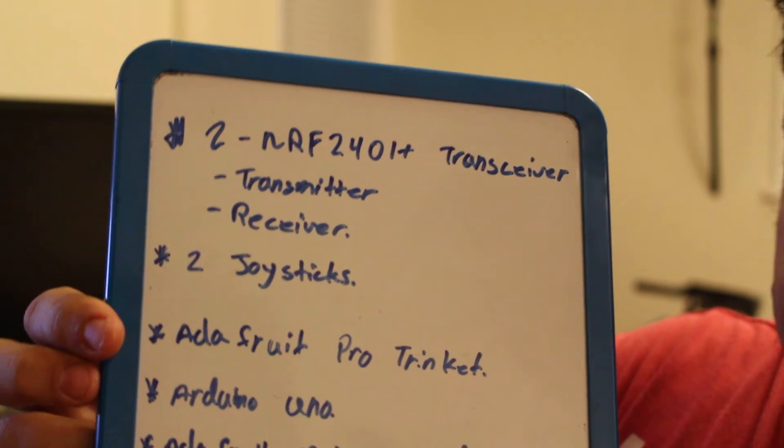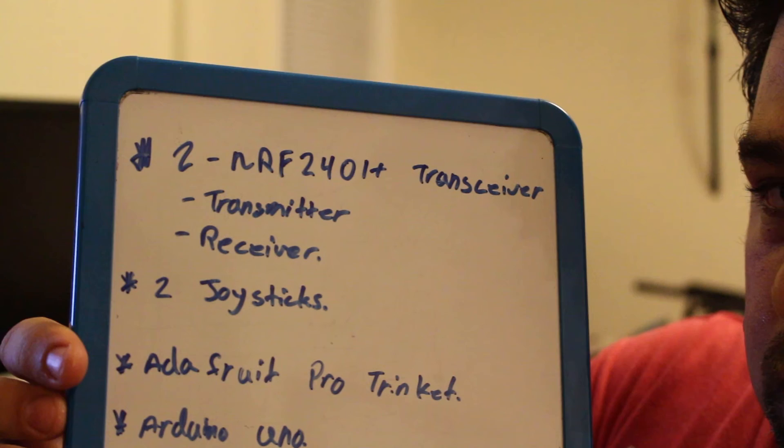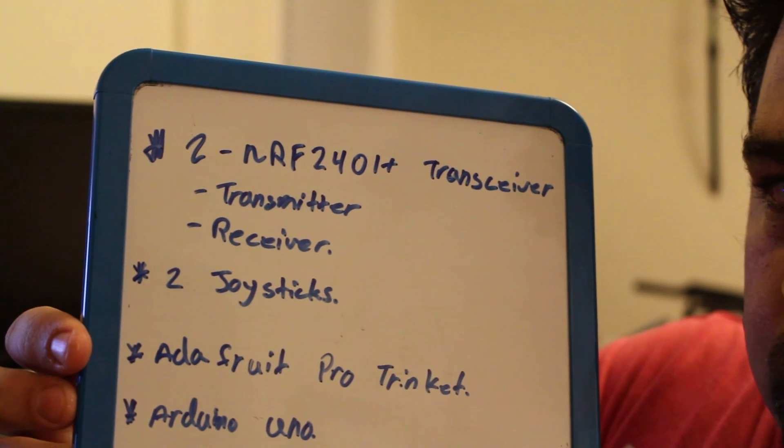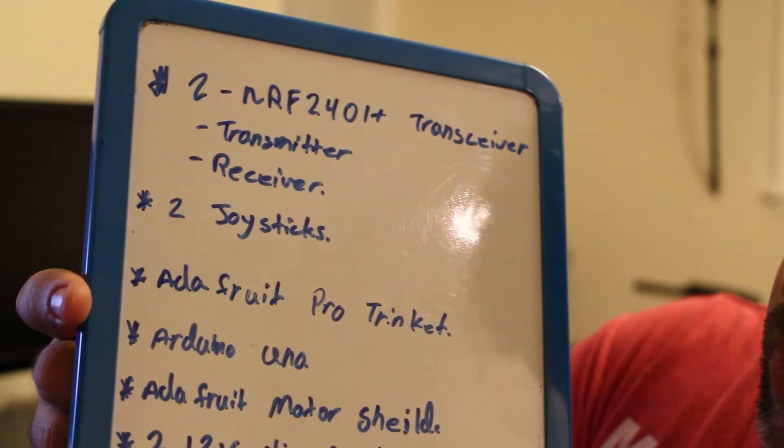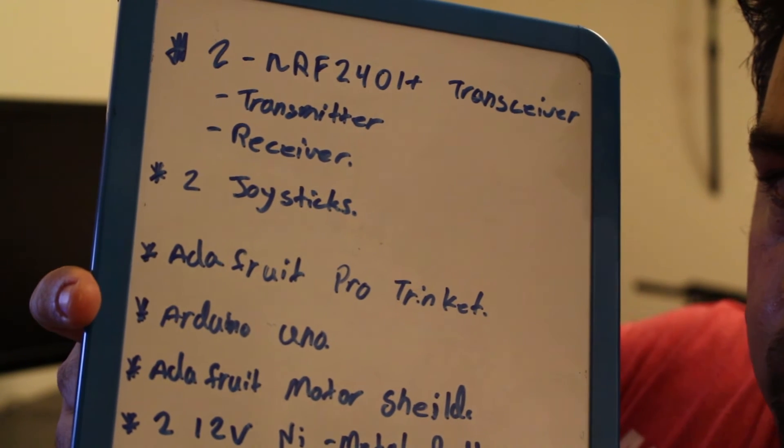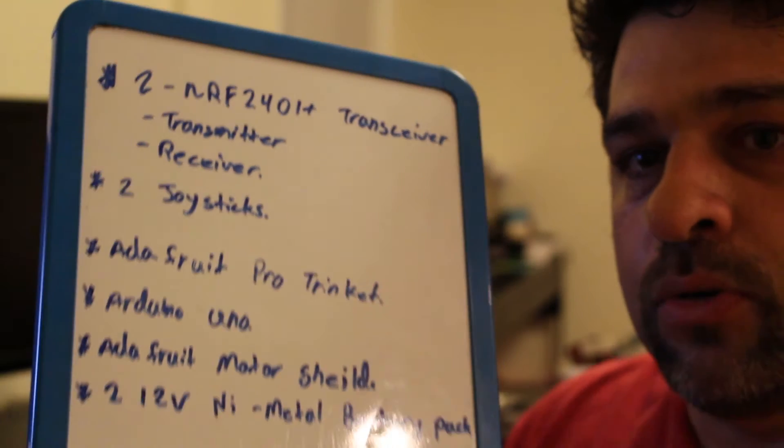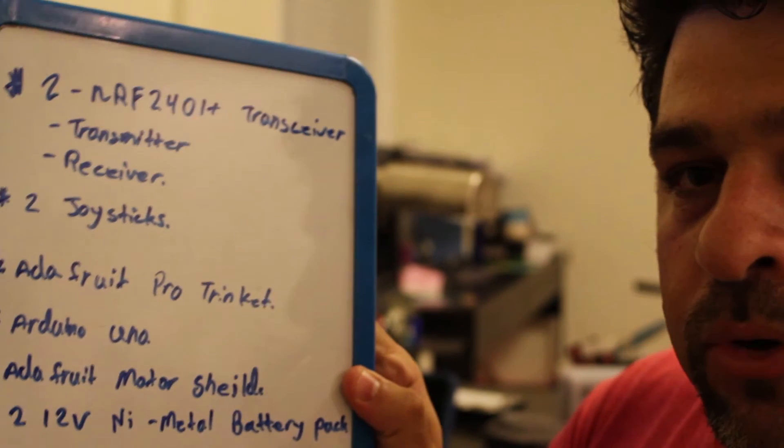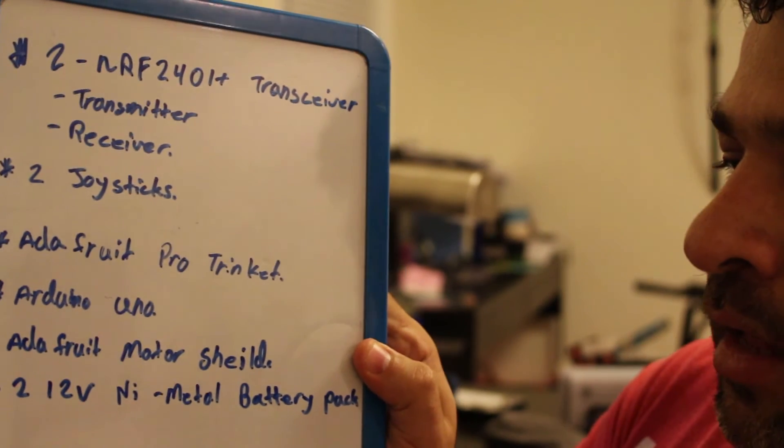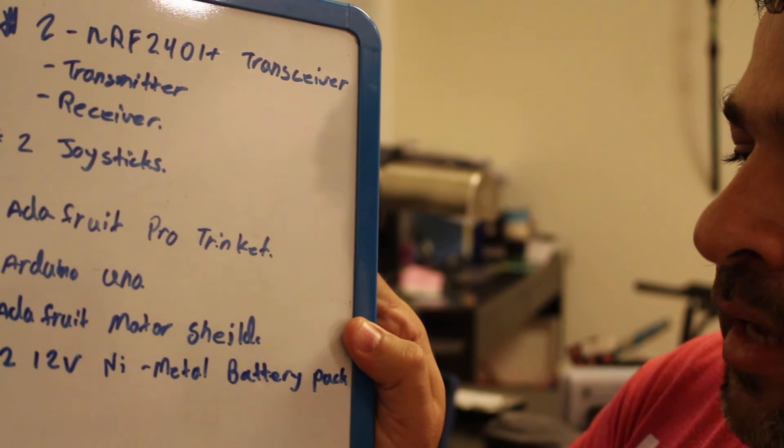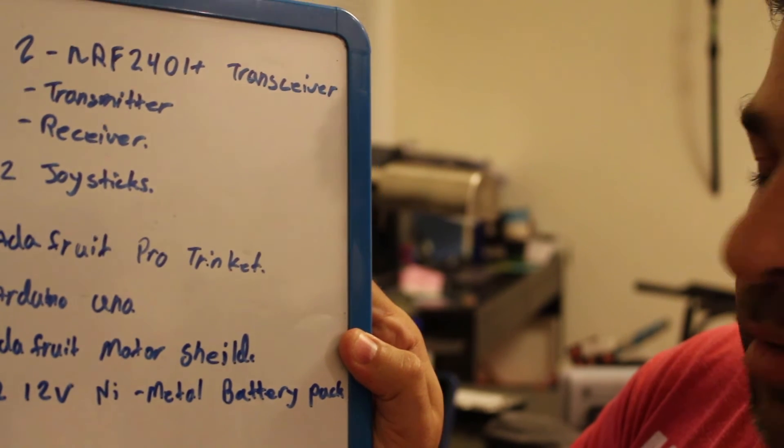We'll use the Adafruit Trinket for transmitting the data. And then we'll use the Uno to basically receive the data. In order for us to drive any module, we'll actually use the Adafruit motor shield. And to power it up,